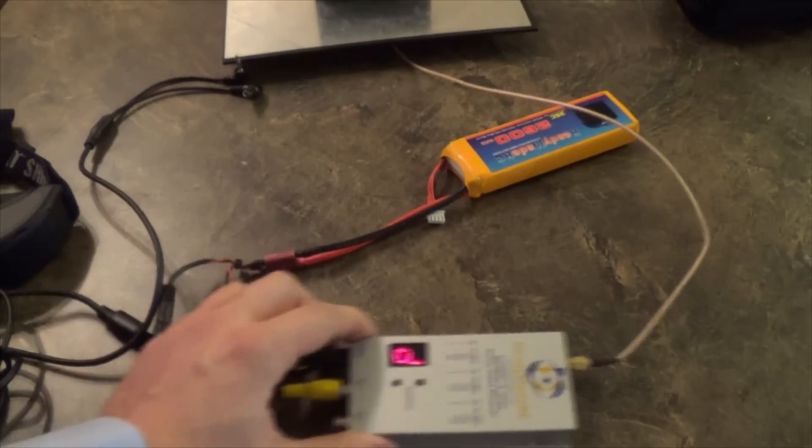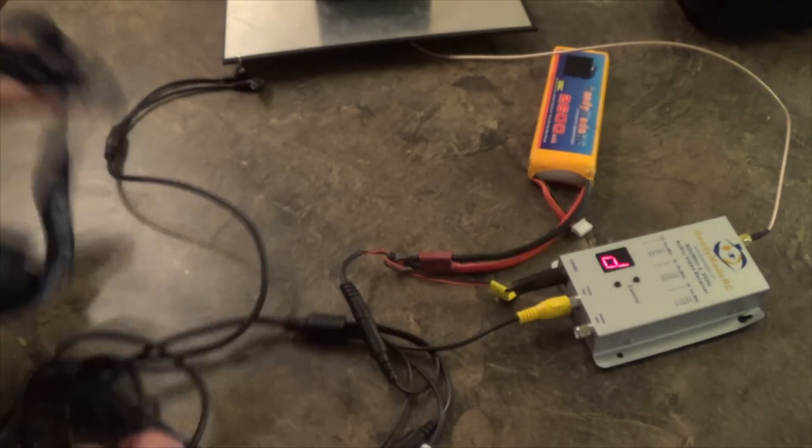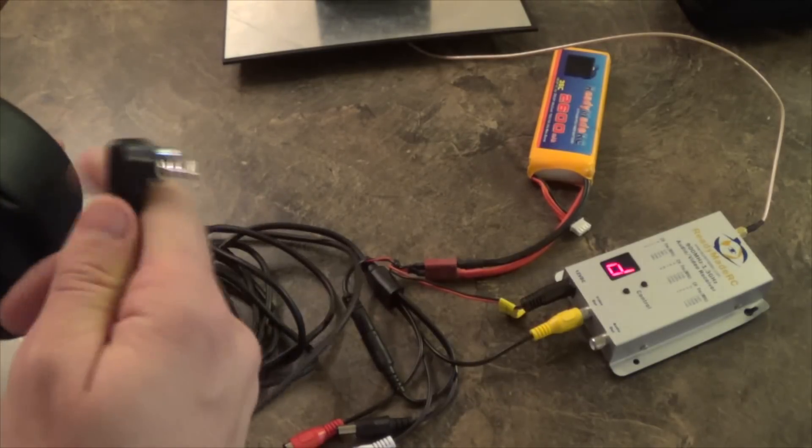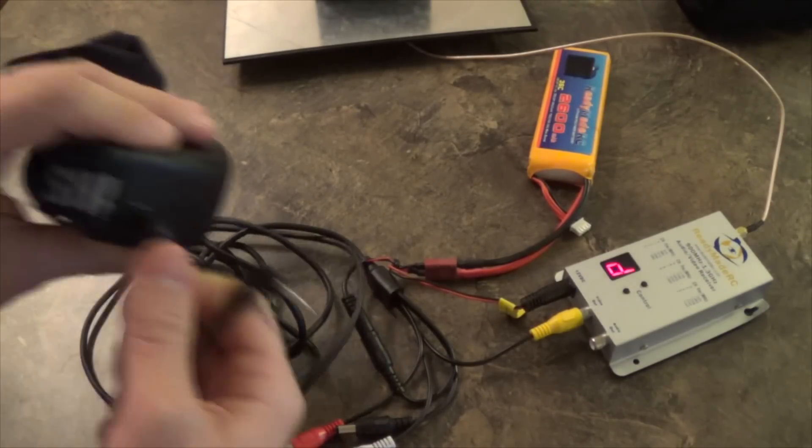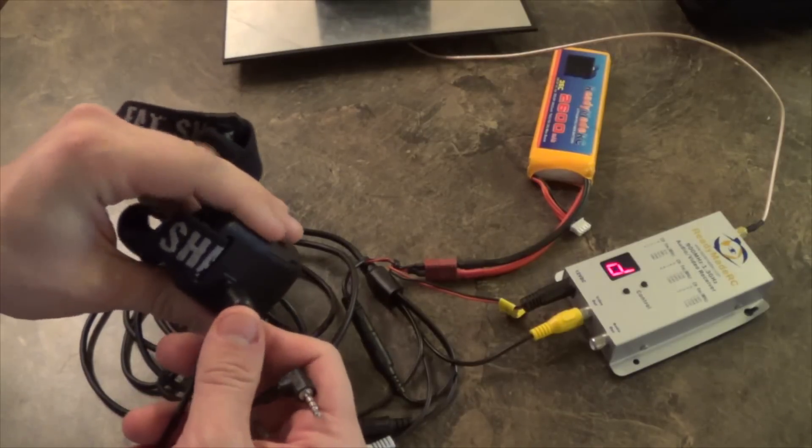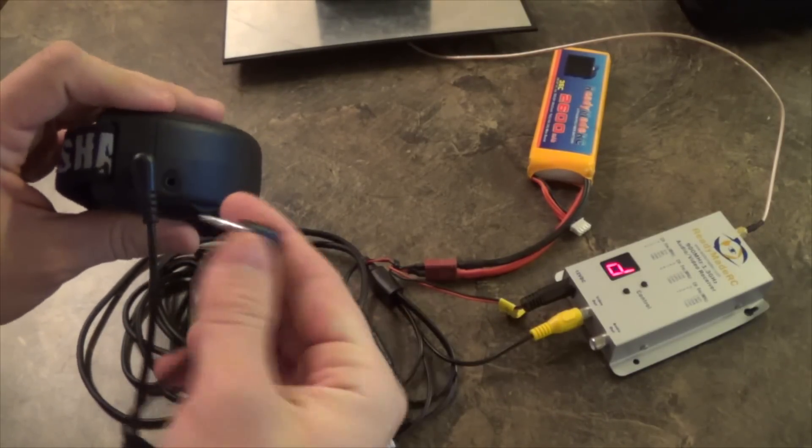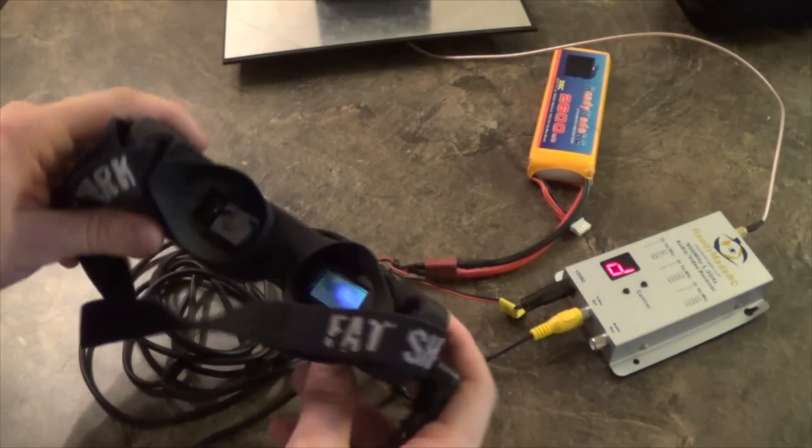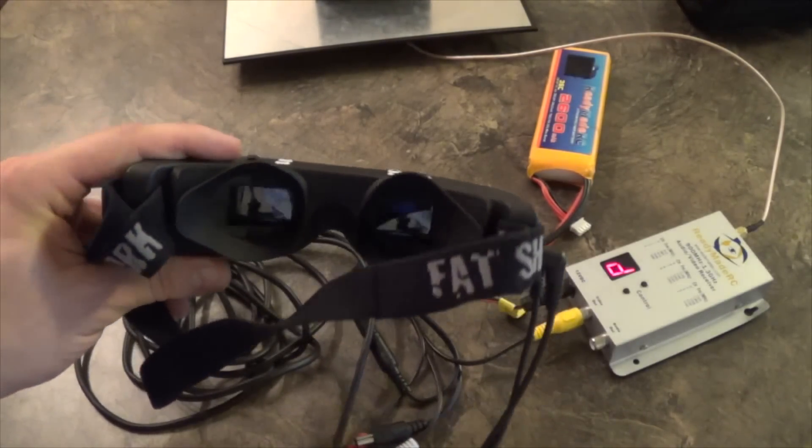You power this with a three cell battery. This three cell battery will also power your goggles. With this system I bought this from Ready Made RC also. I like to use them because they're based in the States and they're immediate shipping. You just put these two in here, now you got power and video and you got the screen on there. That's the system I use.